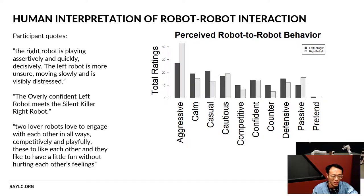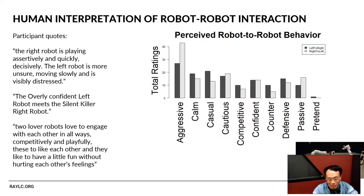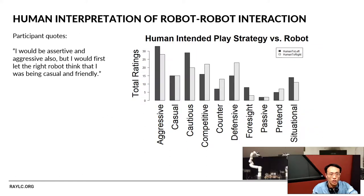The quotes from participants are really interesting — people understood the situation very well. They said things like 'the right robot is playing aggressively, left robot is unsure,' and when asked to tell a story, they would say things like 'the overly confident left robot meets the silent killer right robot.' Others described it as 'two lover robots who love to engage with each other competitively and playfully.' People love to construct a story and interpretation of what they see.